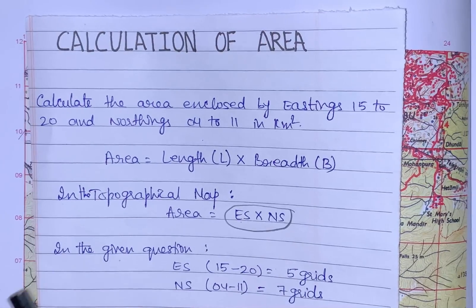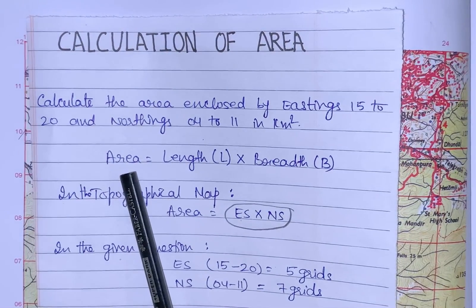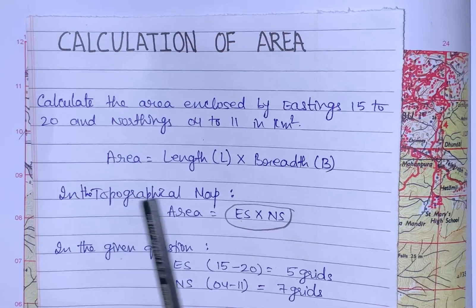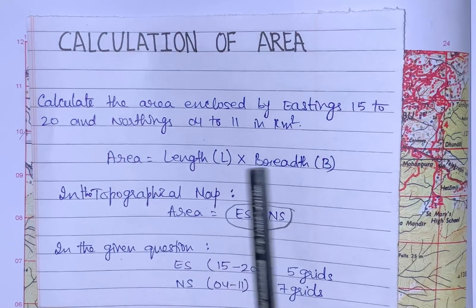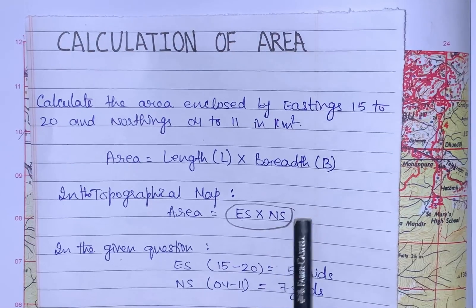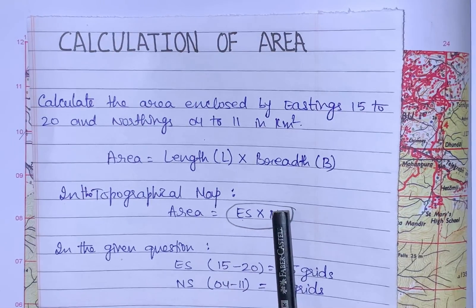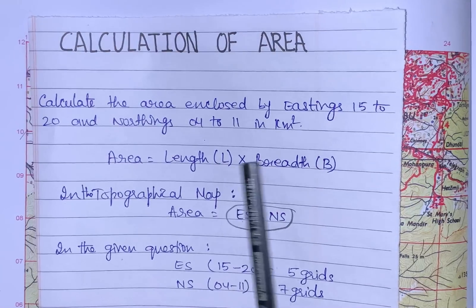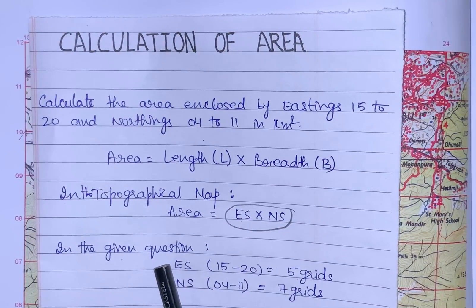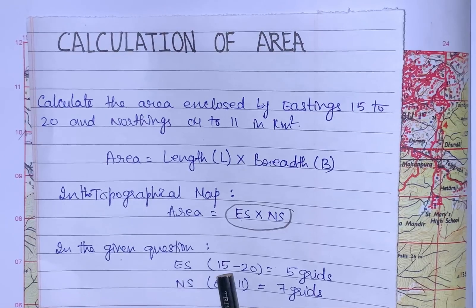All of us know in mathematics area equals length times breadth, but in topographical maps we don't write length and breadth. We write eastings and northings. I have circled this to show the difference. Instead of L and B, we write ES and NS.